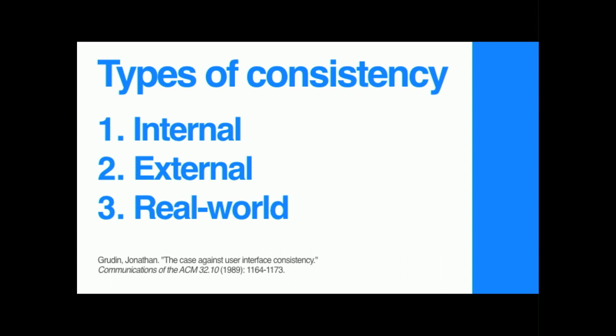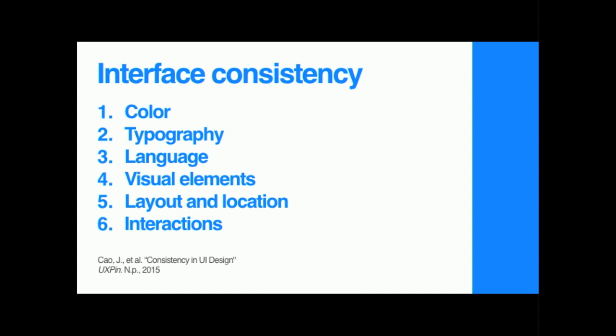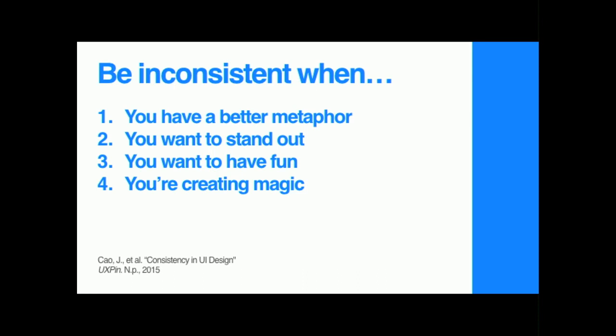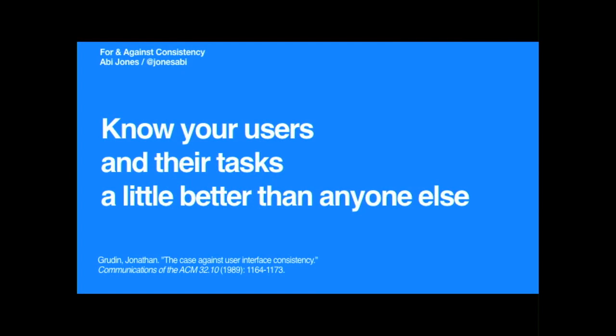Within interface consistency, we have six general areas that are important: color, typography, language, visual elements, layout and location, and interactions. You should be inconsistent when you have a better metaphor, when you want to stand out, when you want to have fun, or when you're creating magic. And the way you can do that is by knowing your users and their tasks — and knowing their needs a little better than everyone else. Thank you.